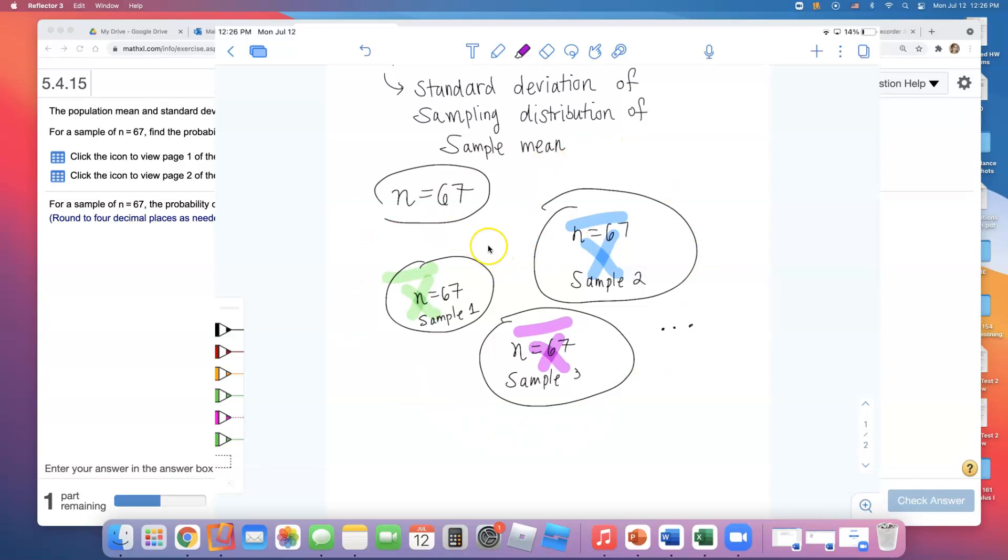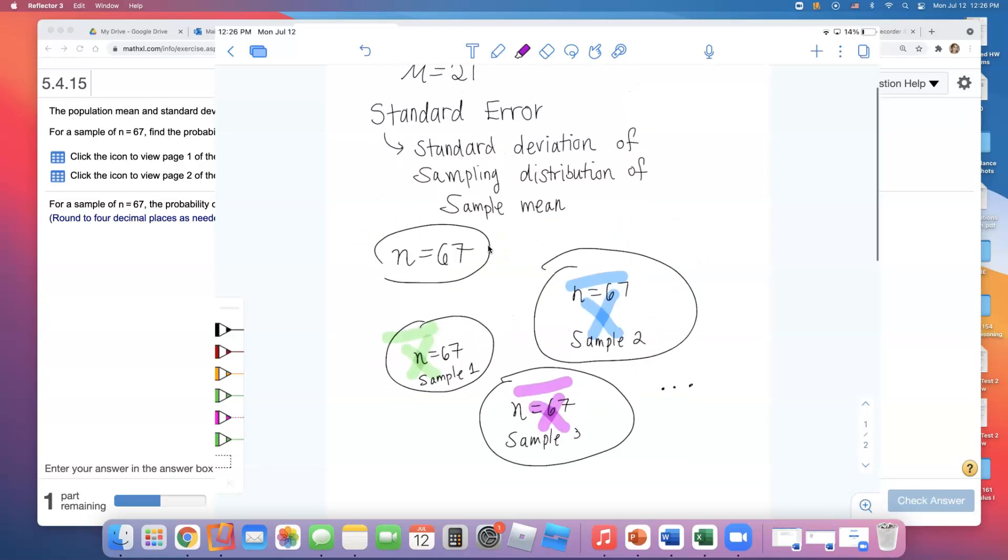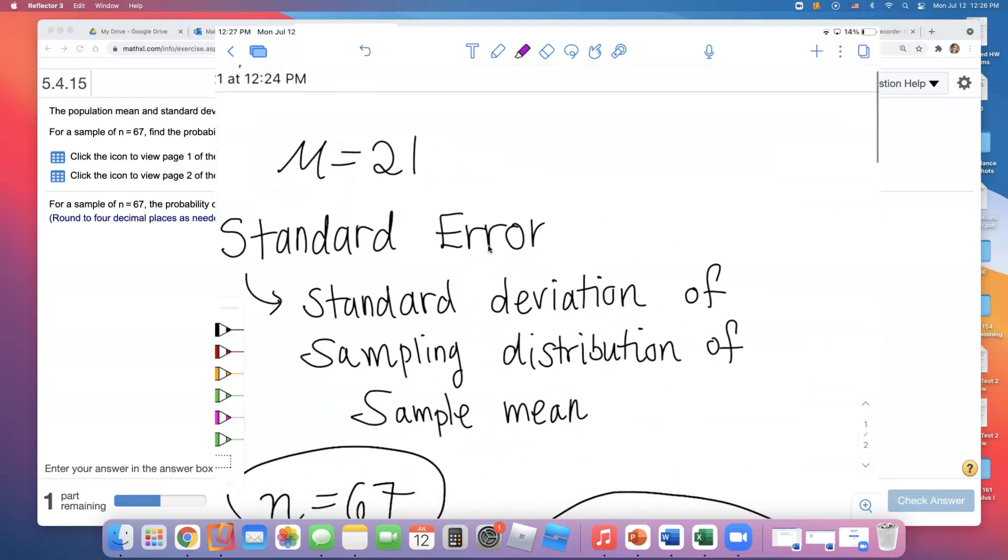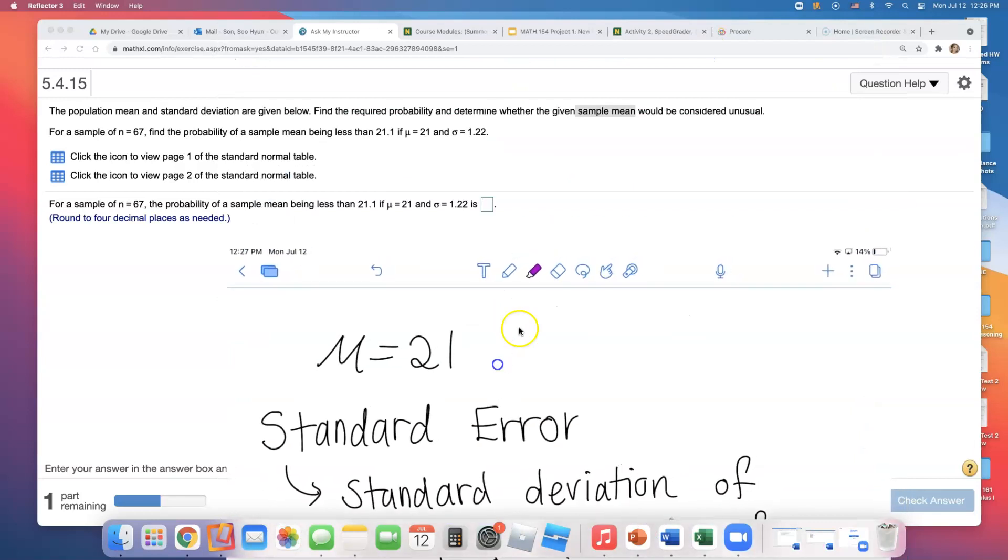We're talking about the distribution of these sample means. When we say standard deviation of sampling distribution of sample means, we're collecting all these different samples, finding their averages, and looking at their center and variation. There is a formula for this.